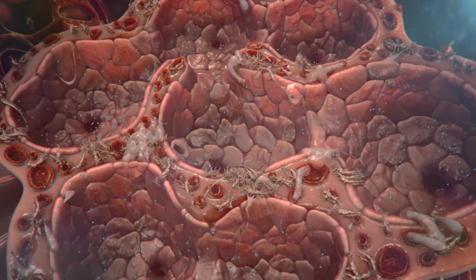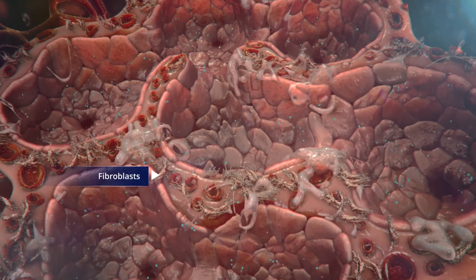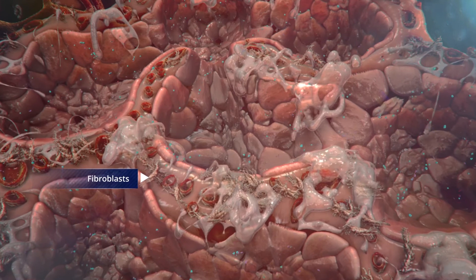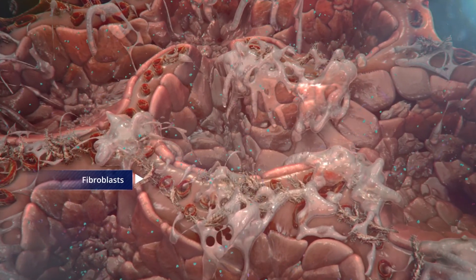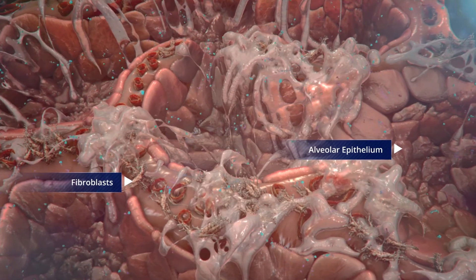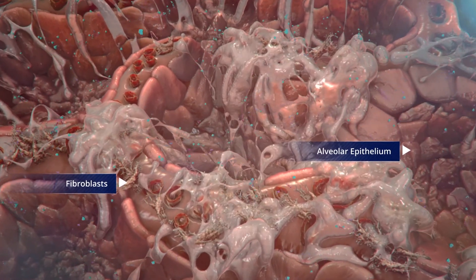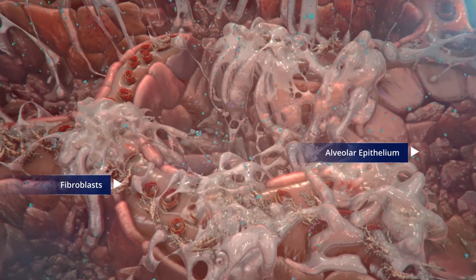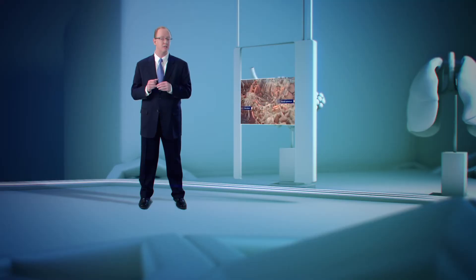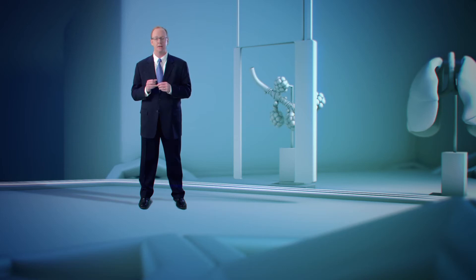In IPF, we believe the repair process is dysregulated with progressive fibrosis within the lung parenchyma. As part of the fibrotic process, or as a result of it, the alveolar epithelium becomes vulnerable to apoptosis, leading to further epithelial dysfunction and the distortion of lung architecture and function. The rate at which this process progresses is highly unpredictable from the time of diagnosis.